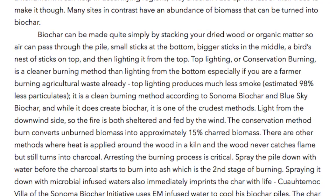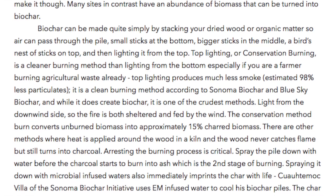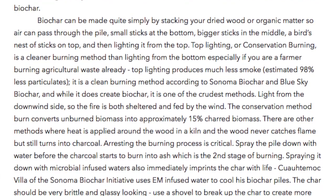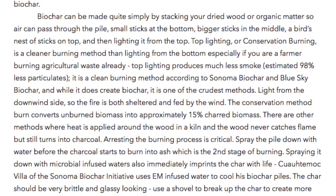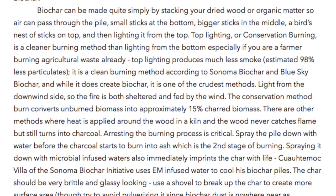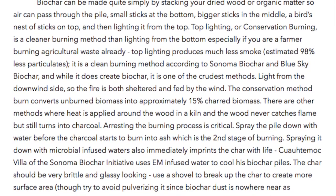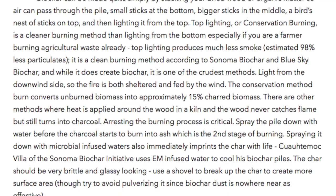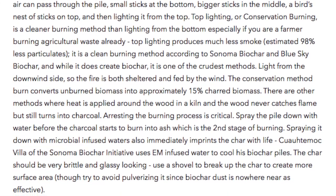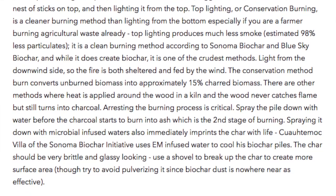Top lighting produces much less smoke — an estimated 98% less particulates. It is a clean burning method according to Sonoma Biochar and Blue Sky Biochar, and while it does create biochar, it is one of the crudest methods. Light from the downwind side so the fire is both sheltered and fed by the wind. The conservation burn method converts unburned biomass into approximately 15% charred biomass.